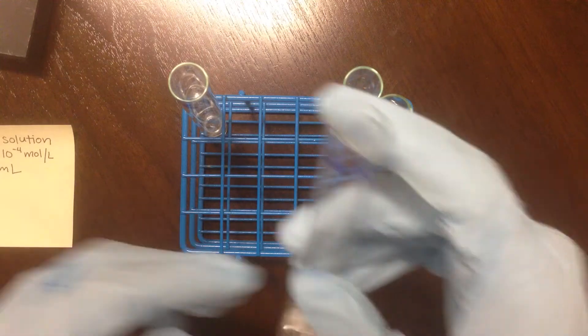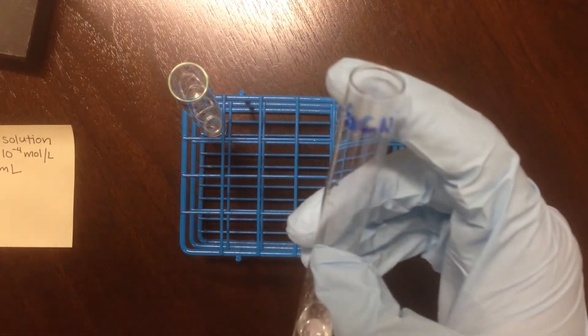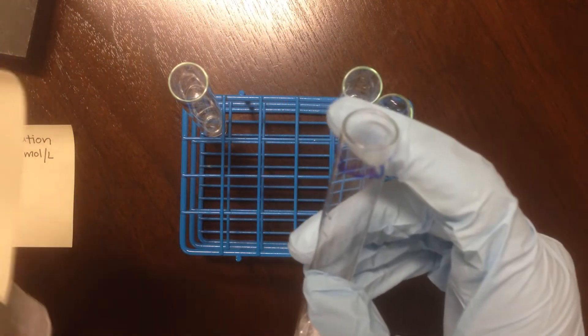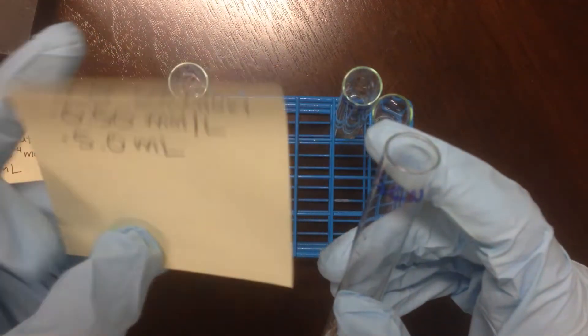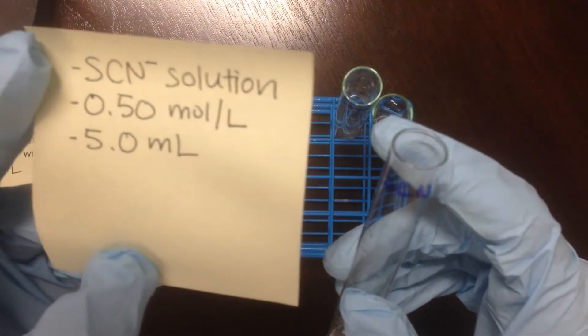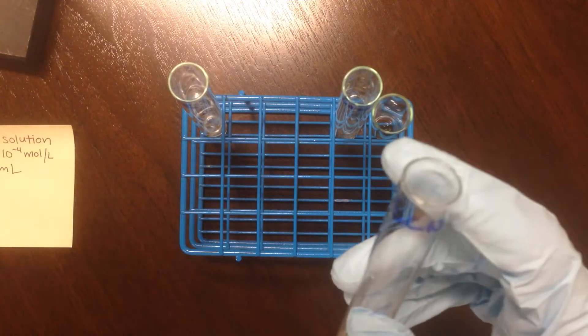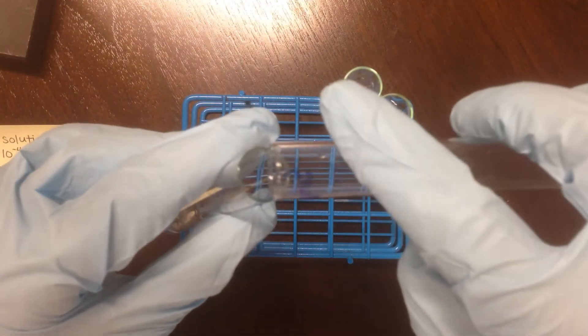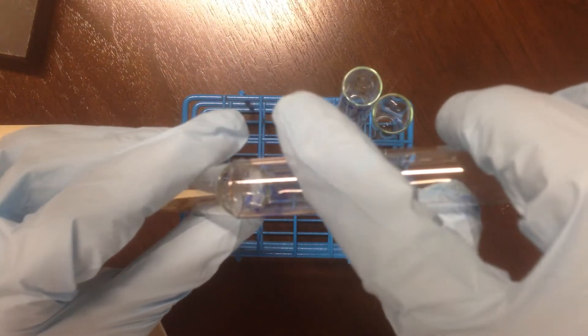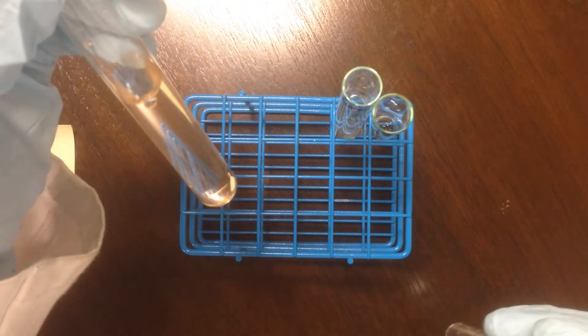Finally, I have the concentrated thiocyanate solution. This is SCN⁻, or thiocyanate, 0.5 moles per liter and 5 milliliters of that. When I add this in, I observe a nice color change to light orange.